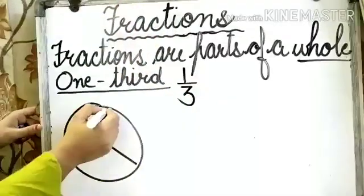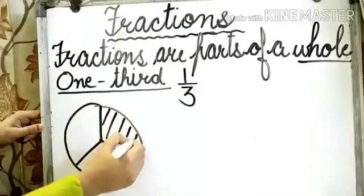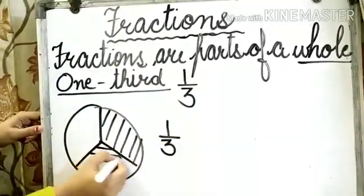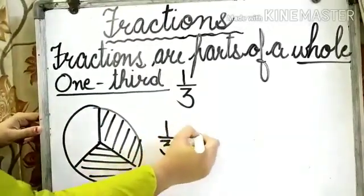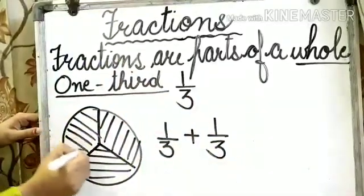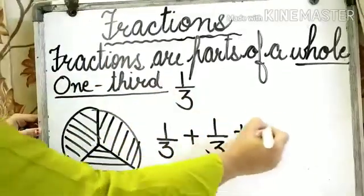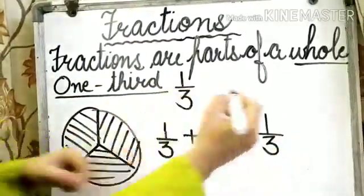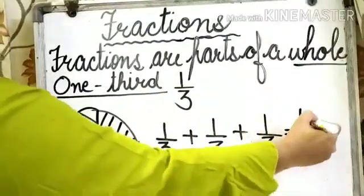The first part, the second part, and the third one. These three one thirds make one whole.